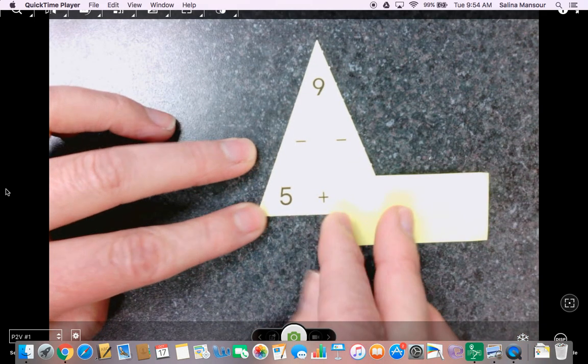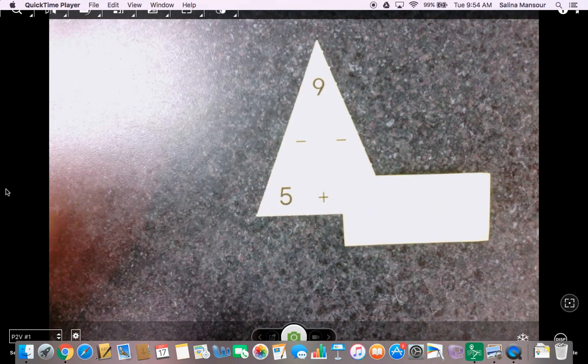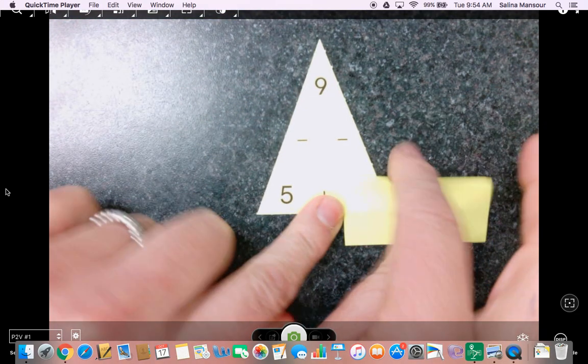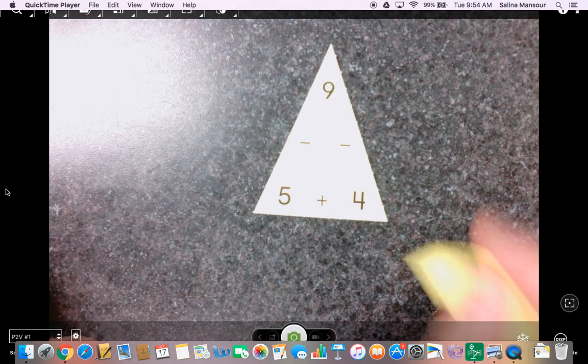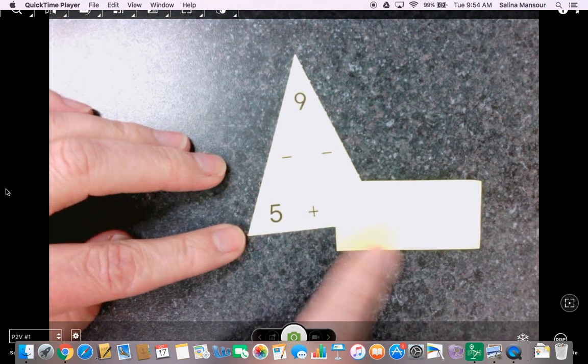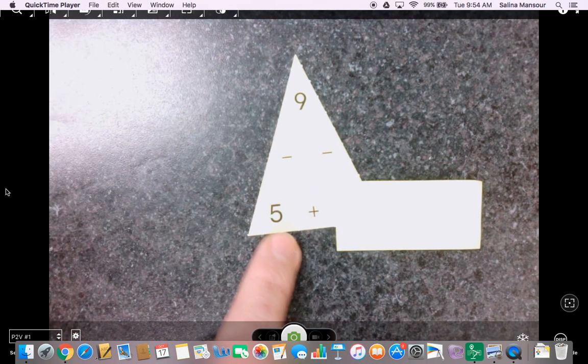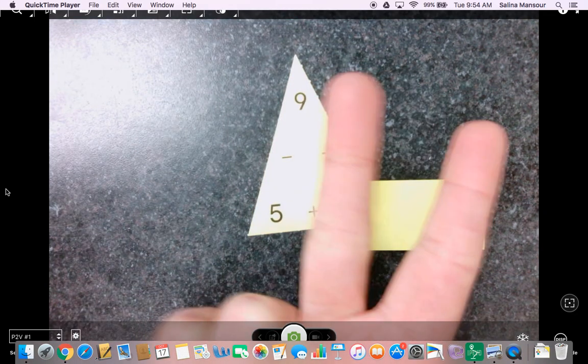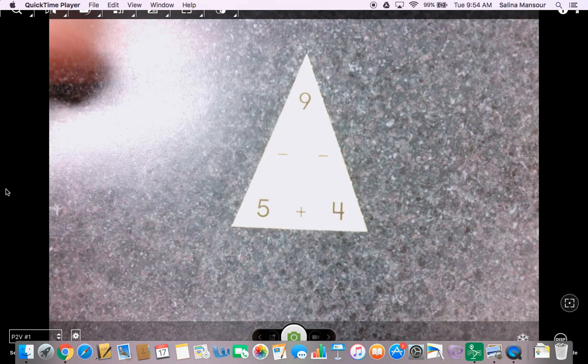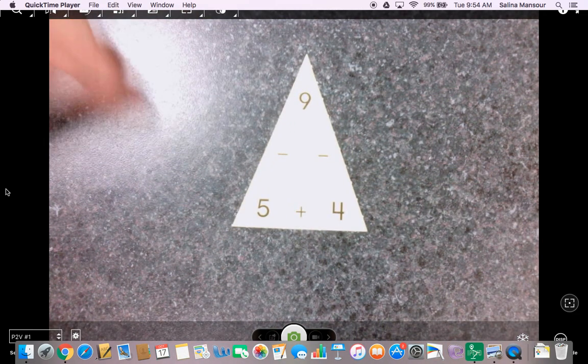Likewise, in this case we might think to ourselves, 9 minus 5 equals 4, and then we could check that it's 4. Or we can think 5 plus what number equals 9? 5, 6, 7, 8, 9, counting up is 4, and then we can check.